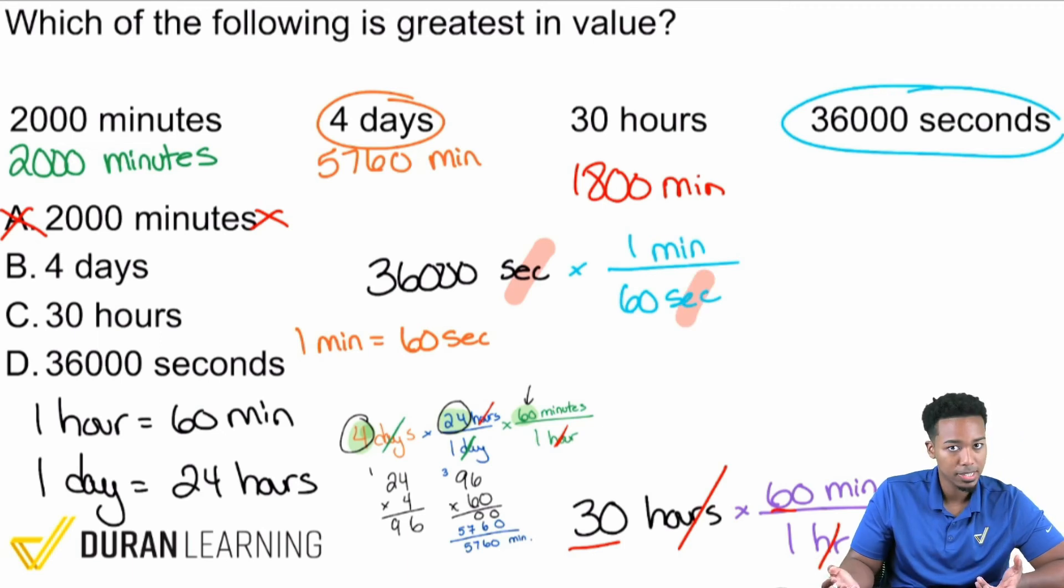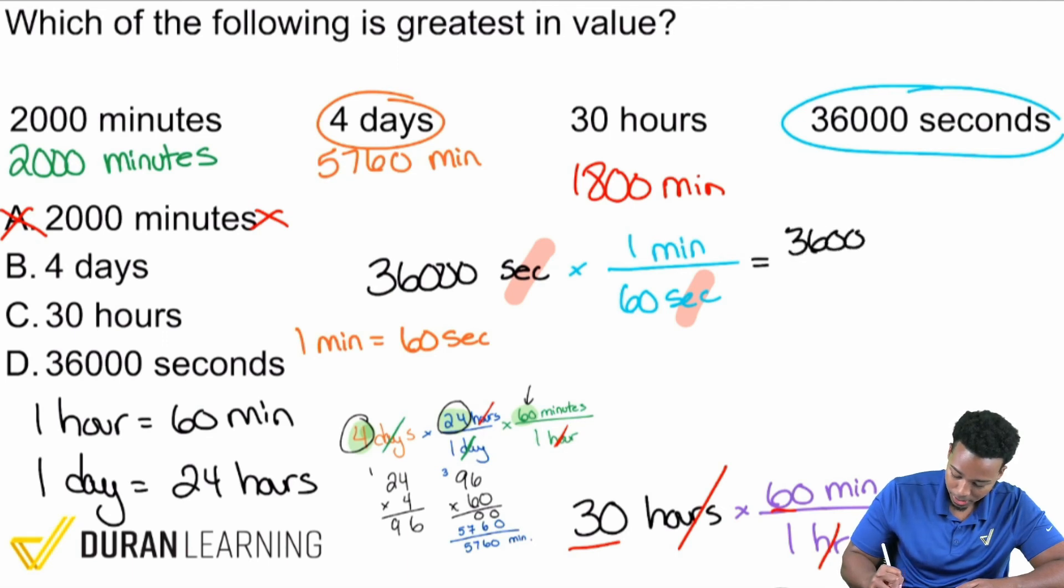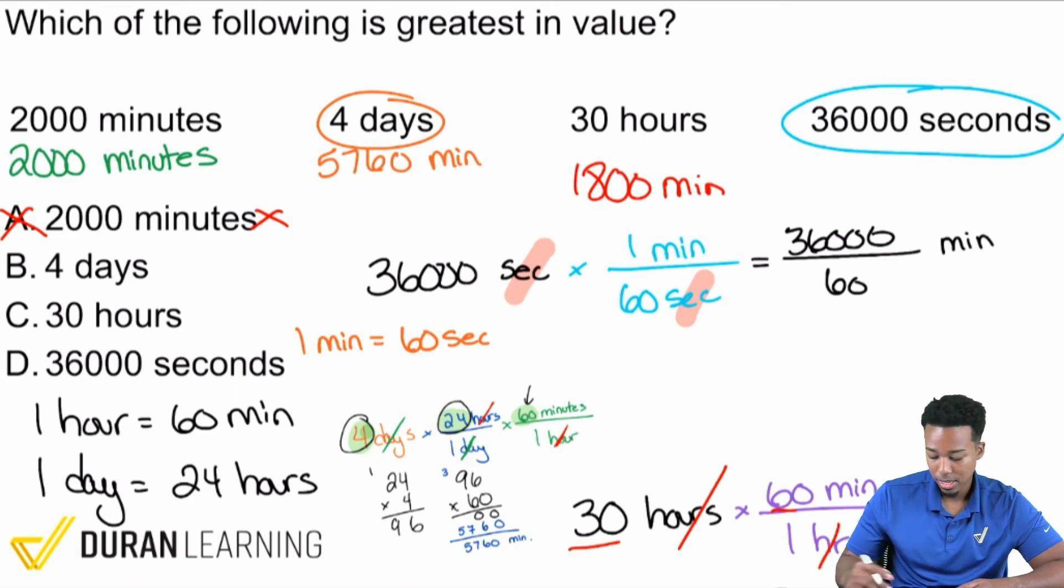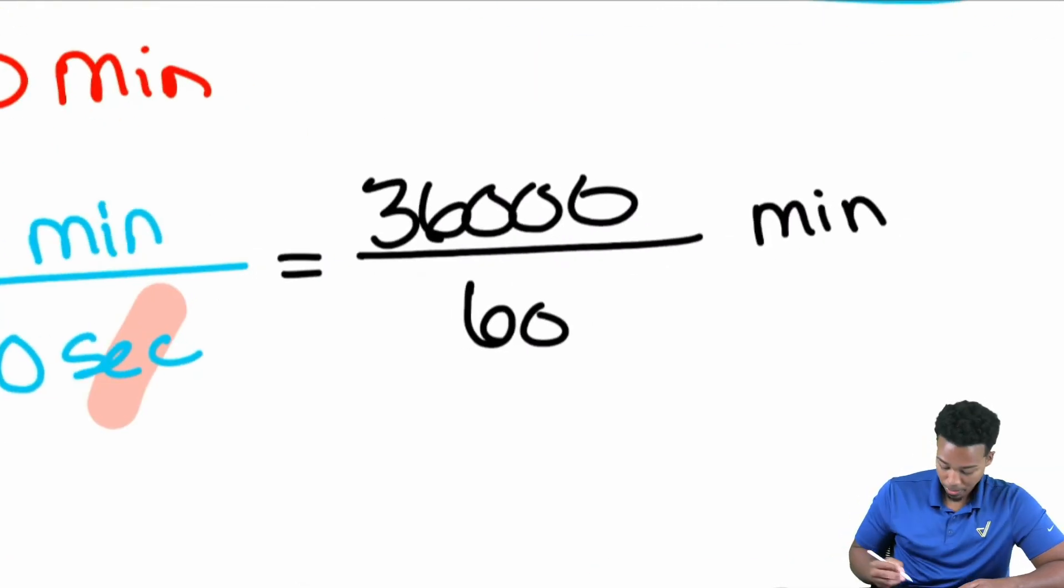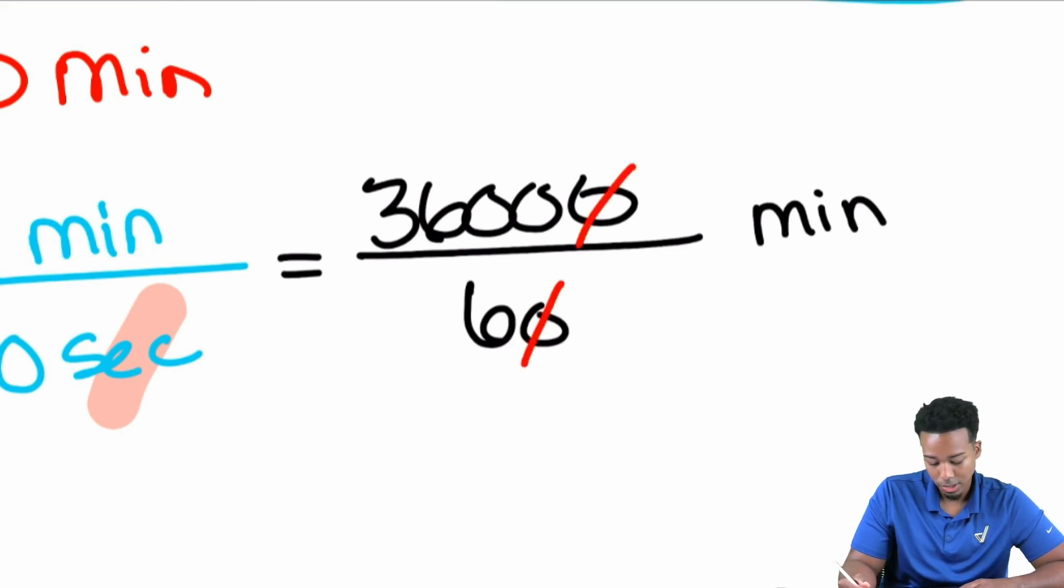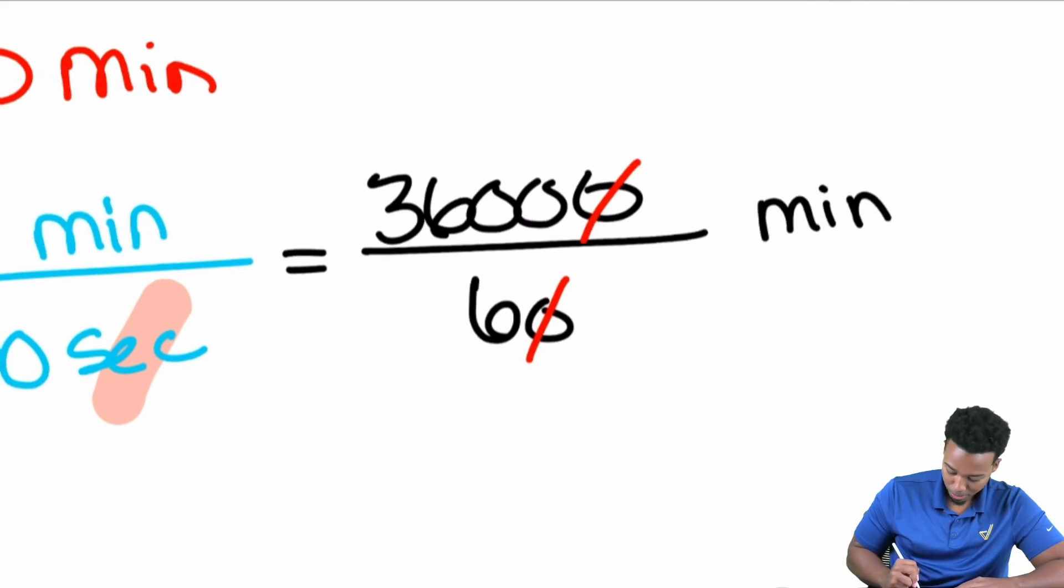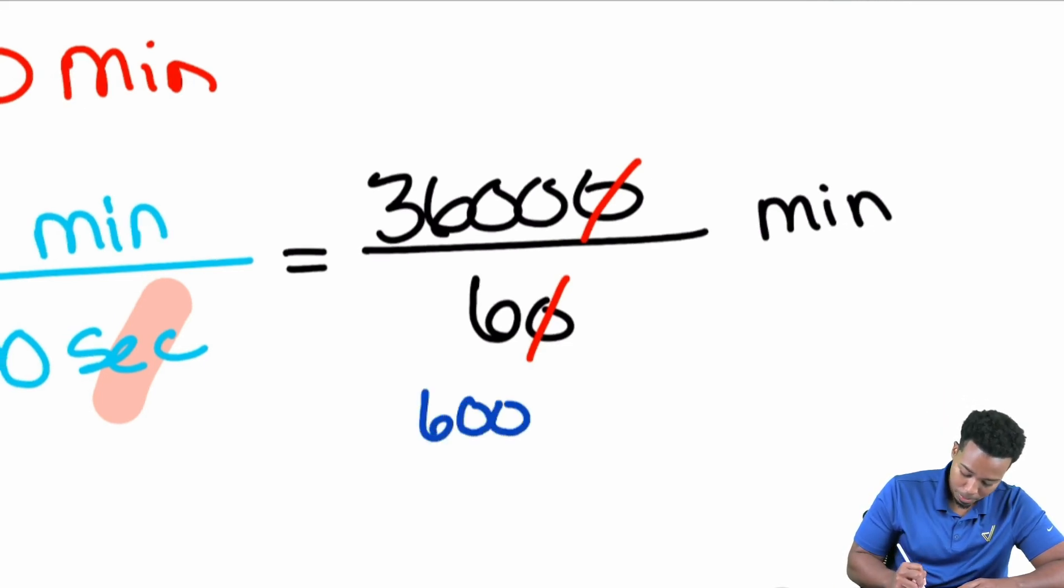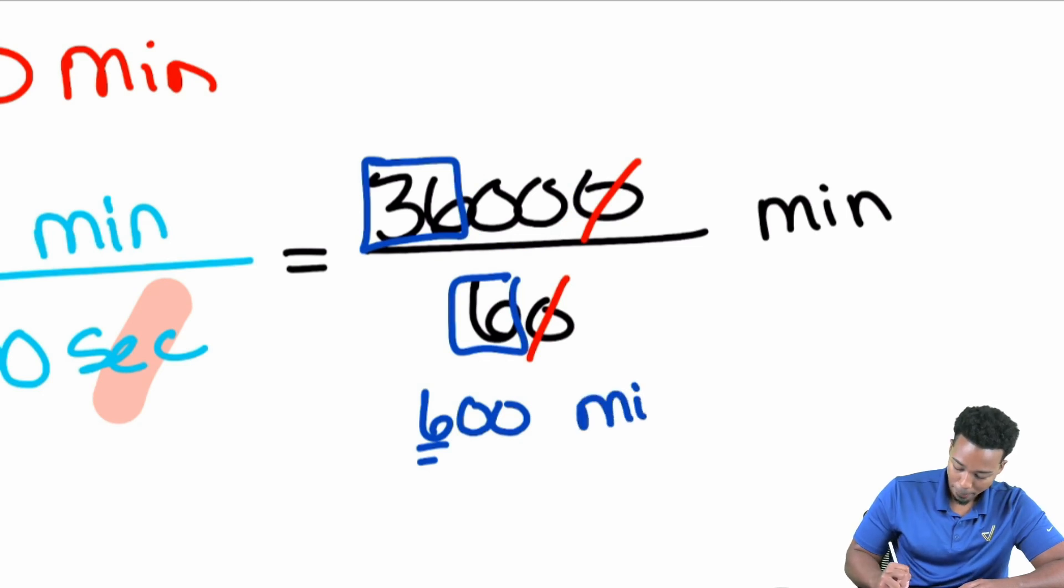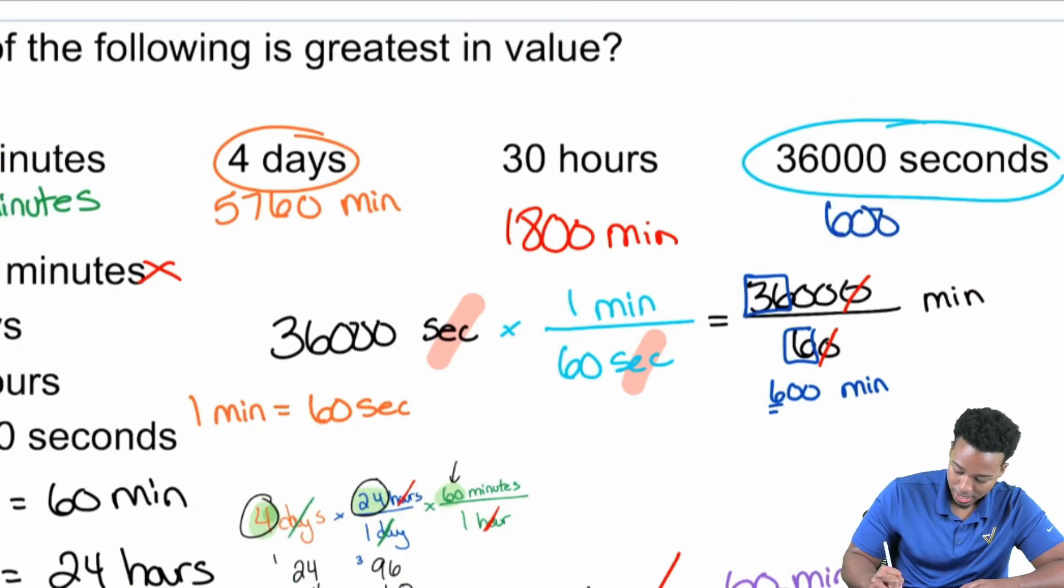In this case it'll be 36,000 divided by 60, and that'll be the number of minutes. So if we take a look here, well the zeros will cancel, so we essentially have 3,600 divided by 6, which will end up being 600. Because 36 divided by 6 is 6, bring those zeros back right there. 600 minutes is what 36,000 seconds is.